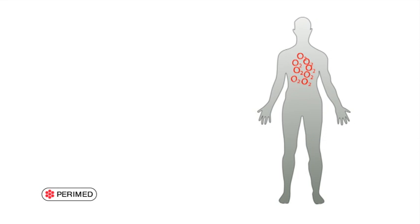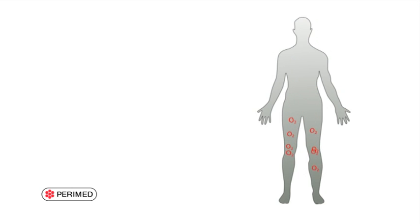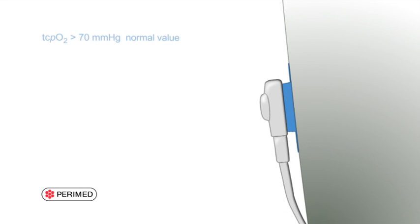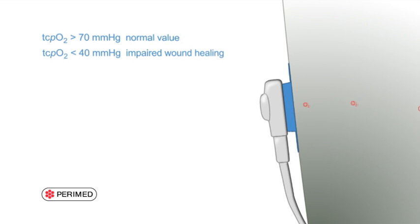Oxygen is then carried via the vasculature to the tissues, where it is possible to measure its diffusion through the skin, using a heated electrode to 44 or 45 degrees centigrade. The transcutaneous oxygen tension in a normal person is about 70 millimeters of mercury. Values lower than 40 millimeters of mercury are associated with impaired wound healing, and values lower than 30 millimeters of mercury are indicative of critical limb ischemia.